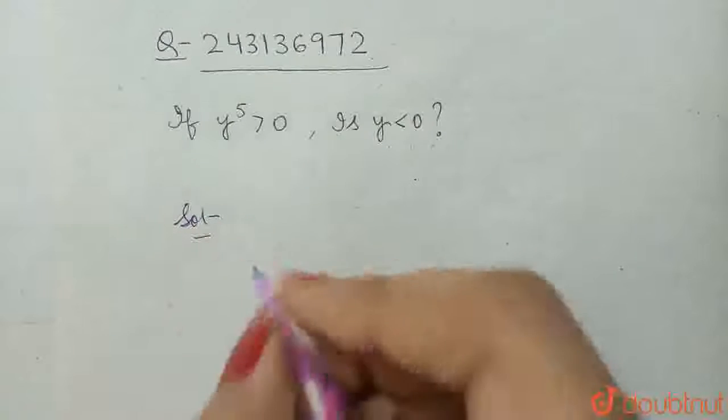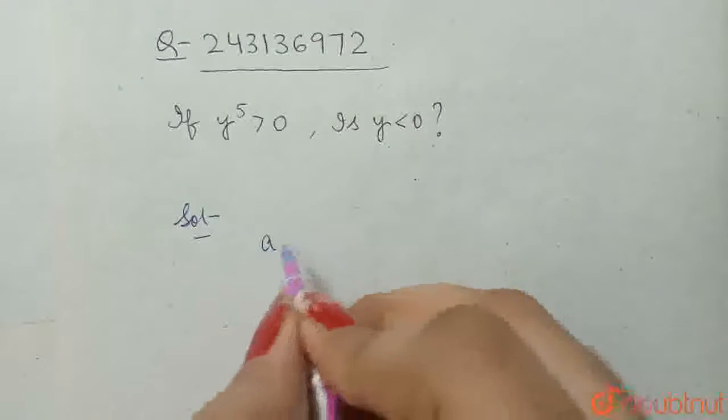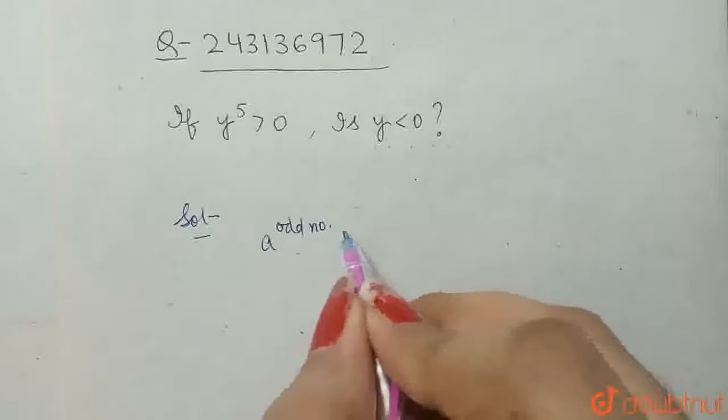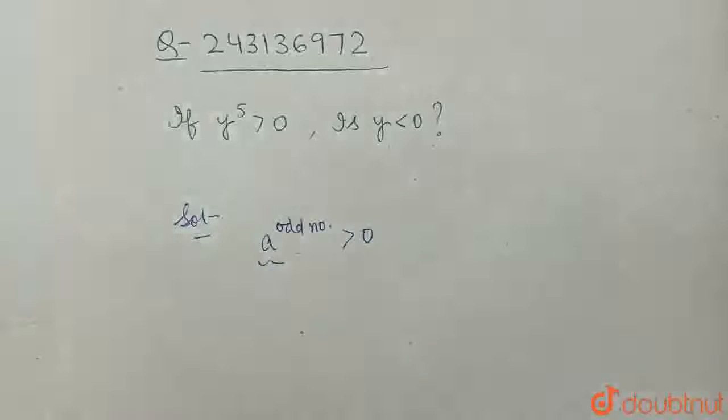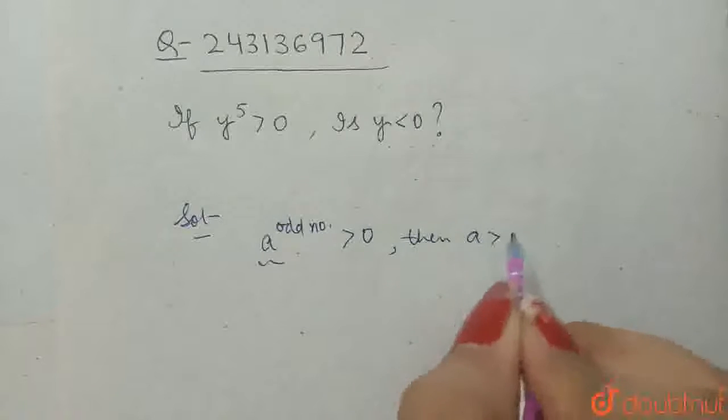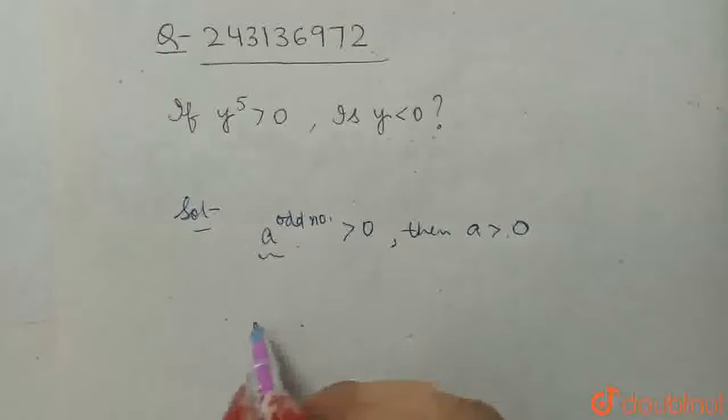So, our solution will be: we know that any number raised to the power of an odd number, if it is positive, then the number will also be positive. Then a is positive, that is, a positive number.